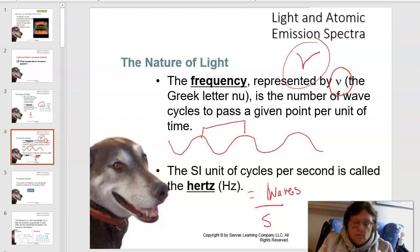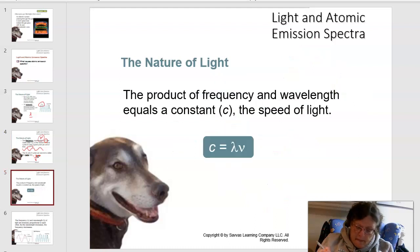Light travels in waves, and when you look at light through a spectrophotometer, you can see different things about that light, including the wavelength of the light. Now, all light waves move at the same speed. All light waves move at the speed of light, and that's 3 times 10 to the 8 meters per second.